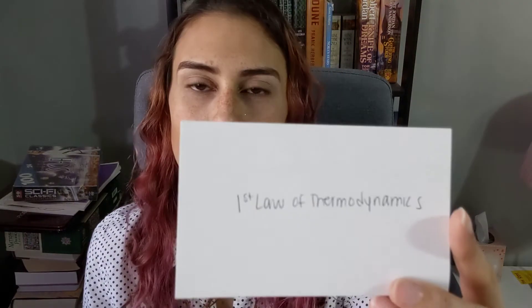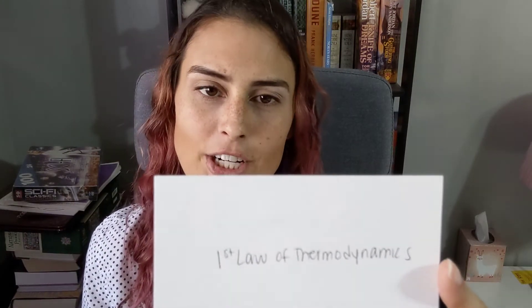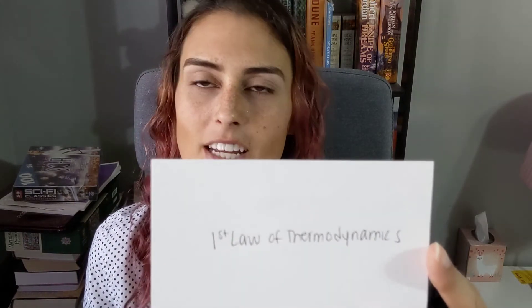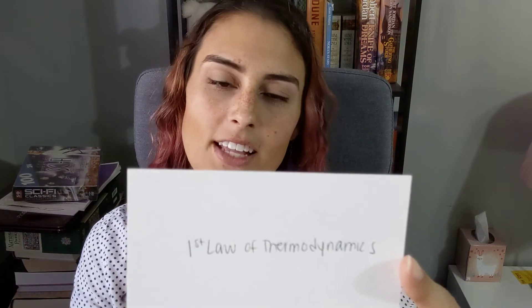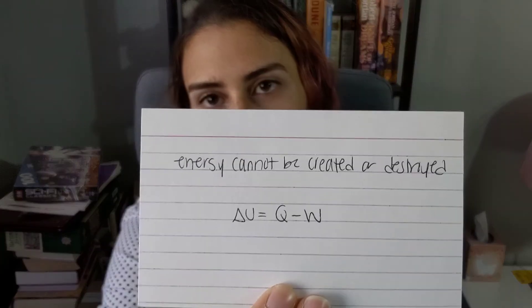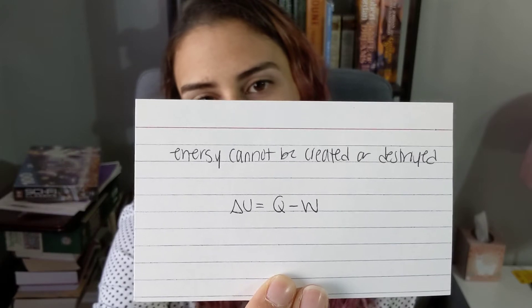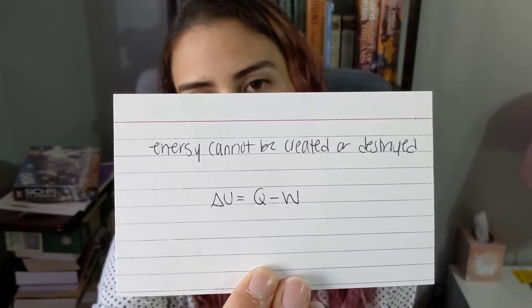The first law of thermodynamics is that energy cannot be created or destroyed, so therefore delta U equals Q minus W, where W is work.